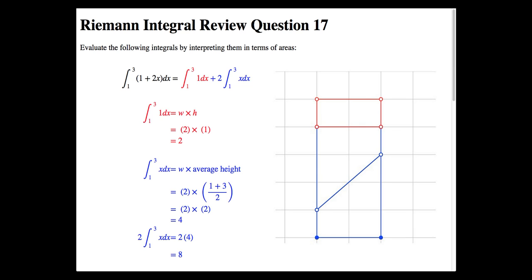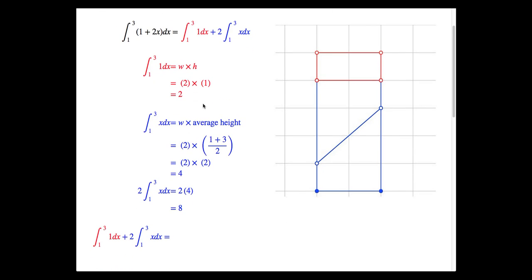Putting it all together, we can calculate the integral of the whole function by adding the integral that we calculated of 1dx plus 2 times the integral of xdx over the range of 1 to 3. And we just simply add the two parts together, in which case we get 10.